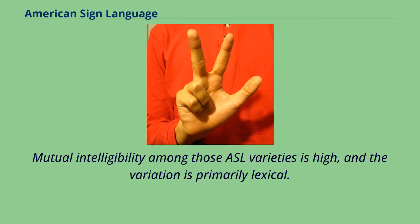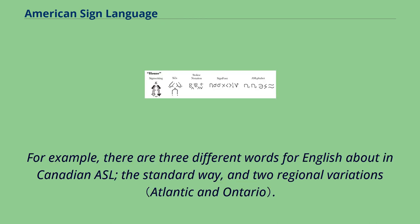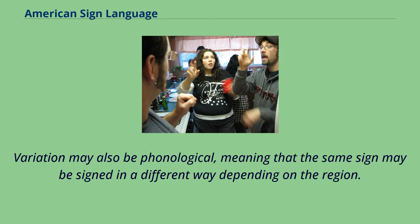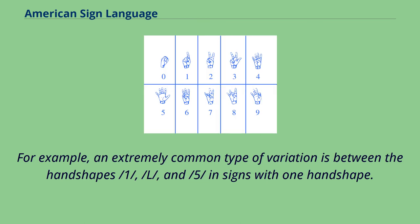Mutual intelligibility among those ASL varieties is high, and the variation is primarily lexical. For example, there are three different words for the English word 'about' in Canadian ASL: the standard way and two regional variations. Variation may also be phonological, meaning that the same sign may be signed in a different way depending on the region. For example, an extremely common type of variation is between the handshapes /1/, /L/, and /5/ in signs with one handshape.